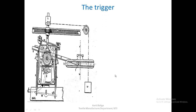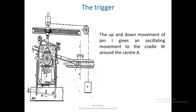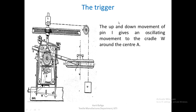We are now in a position to see how the building mechanism actually works. The trigger is the up and down movement of pin I, which is attached to the bobbin rail. As the bobbin rail moves up or down, this is the starting triggering moment for the building mechanism.